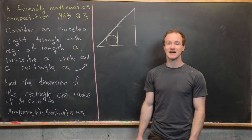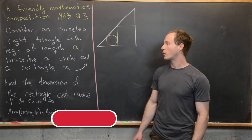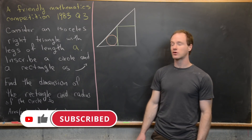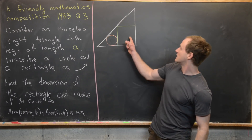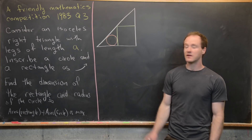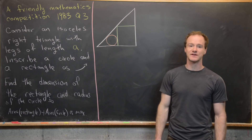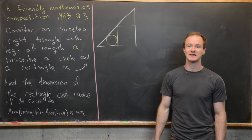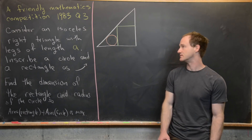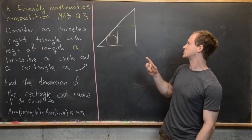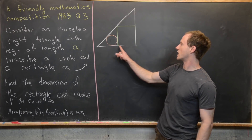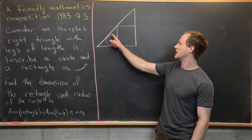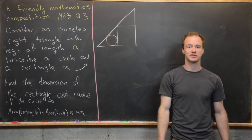So let's consider an isosceles right triangle with legs of length A. Inside of that we want to inscribe a circle and a rectangle. The goal is to find the dimensions of the rectangle and the radius of the circle so that the area of the rectangle plus the area of the circle is a maximum. I already have my picture here — I've got this isosceles right triangle, in green I have this inscribed rectangle, and then in this peach color I have this inscribed circle.